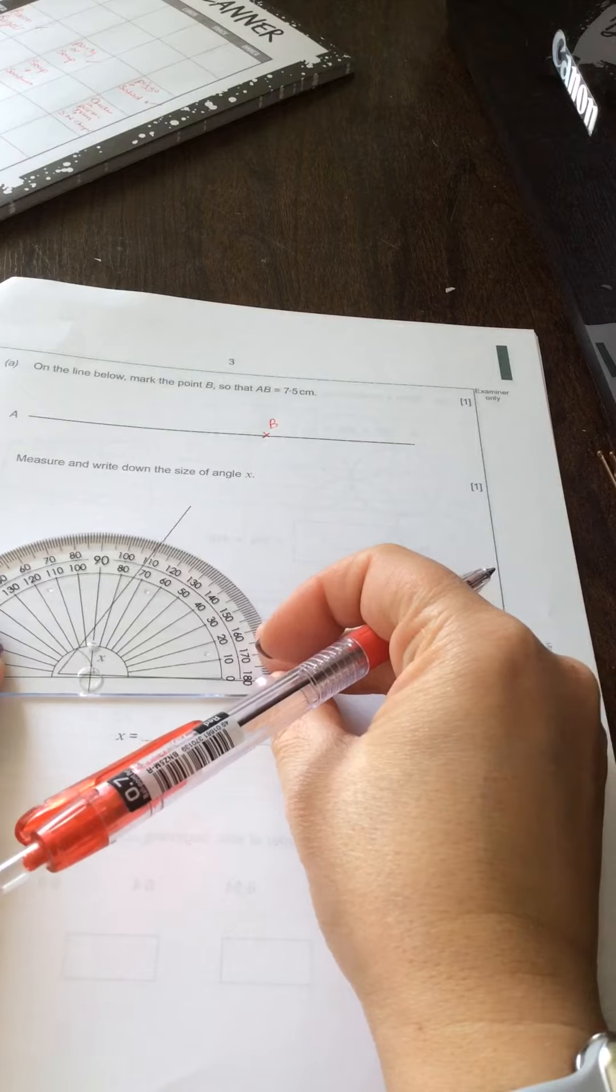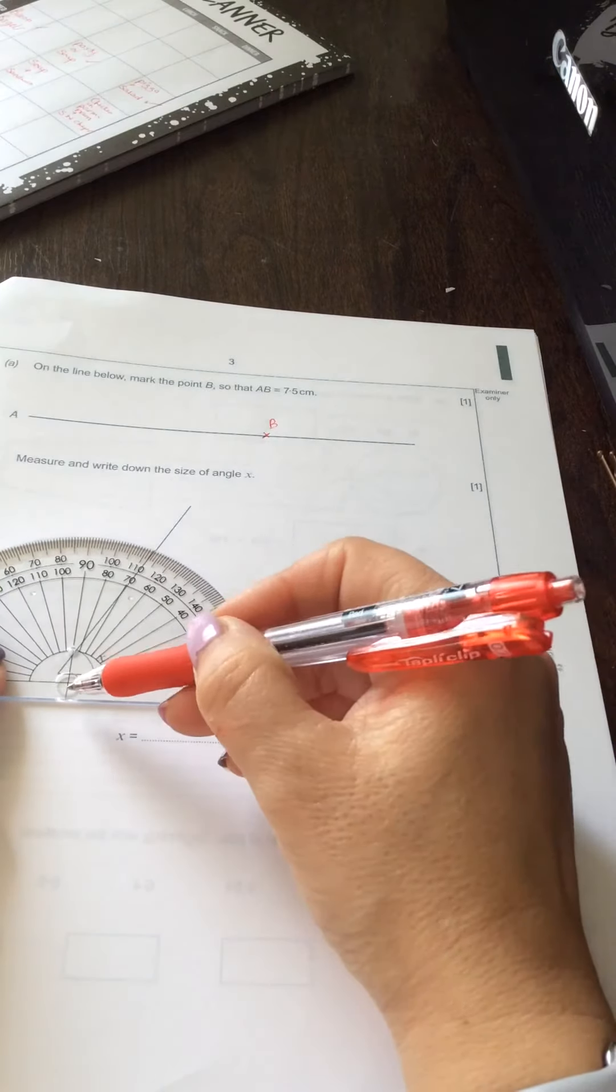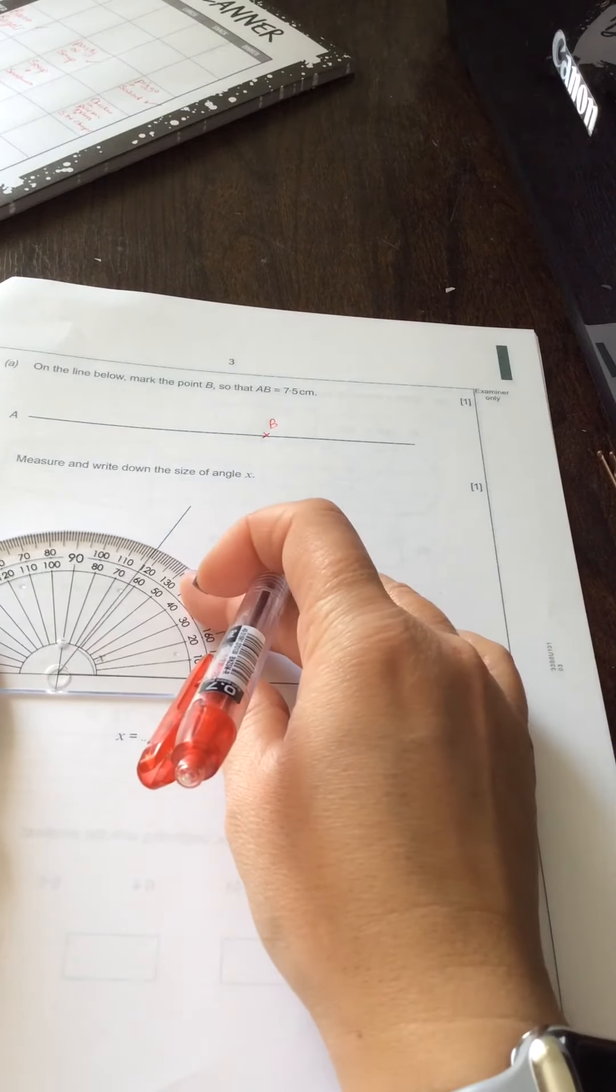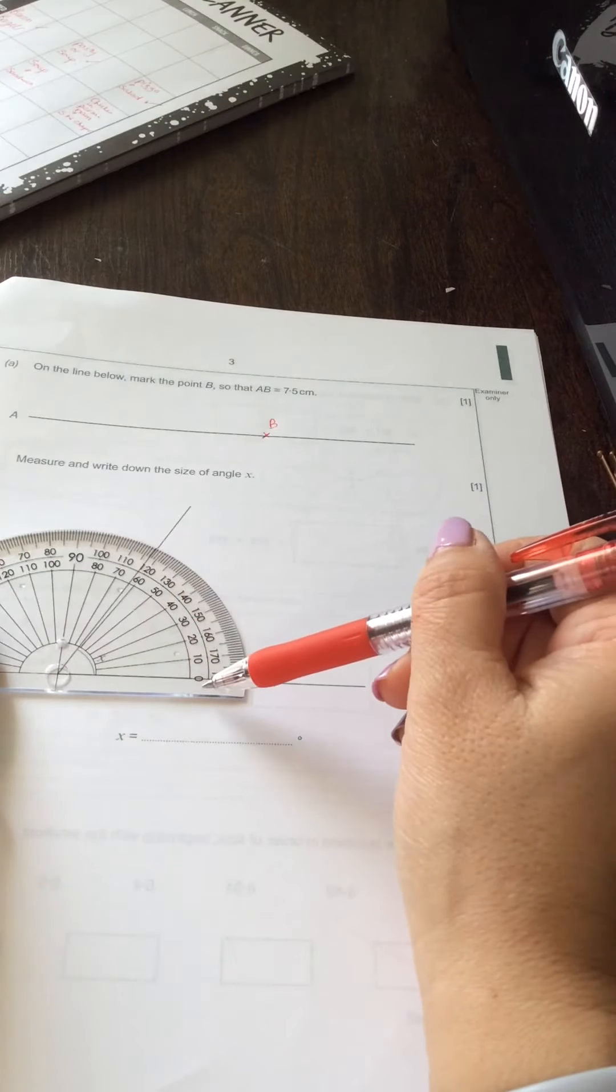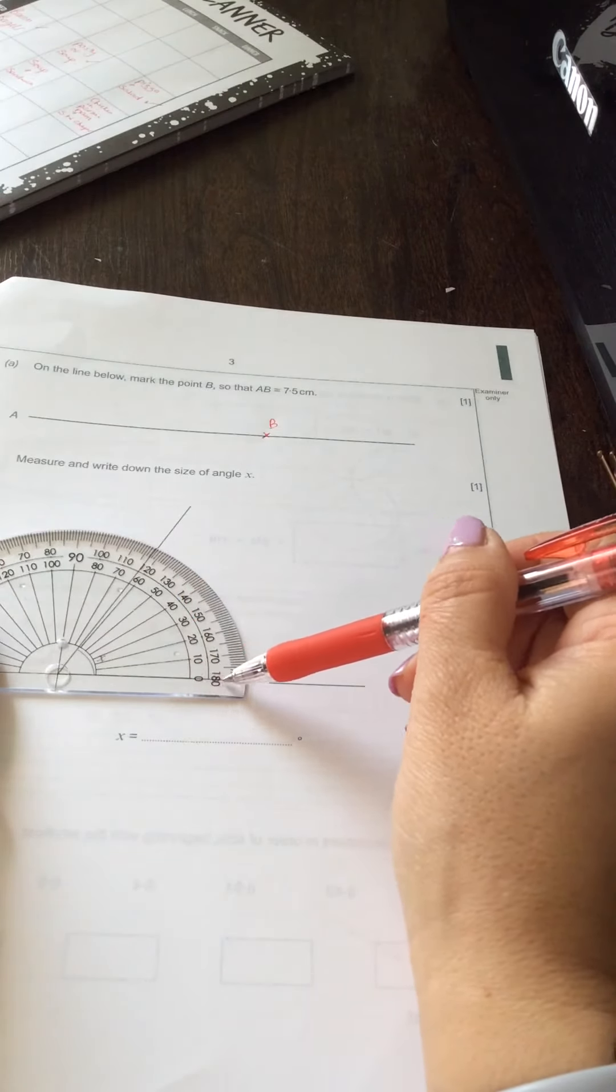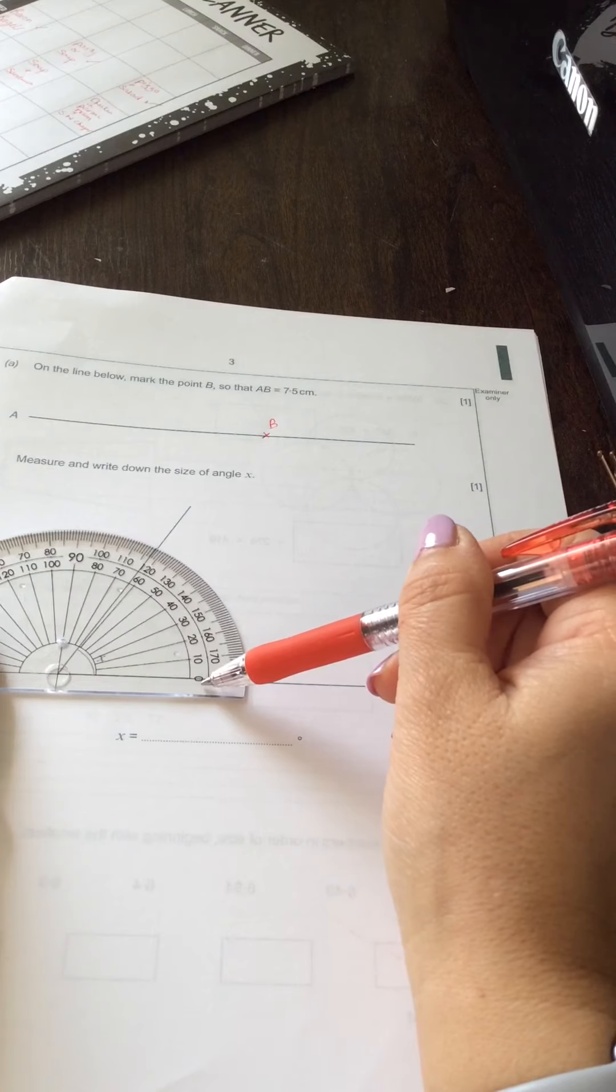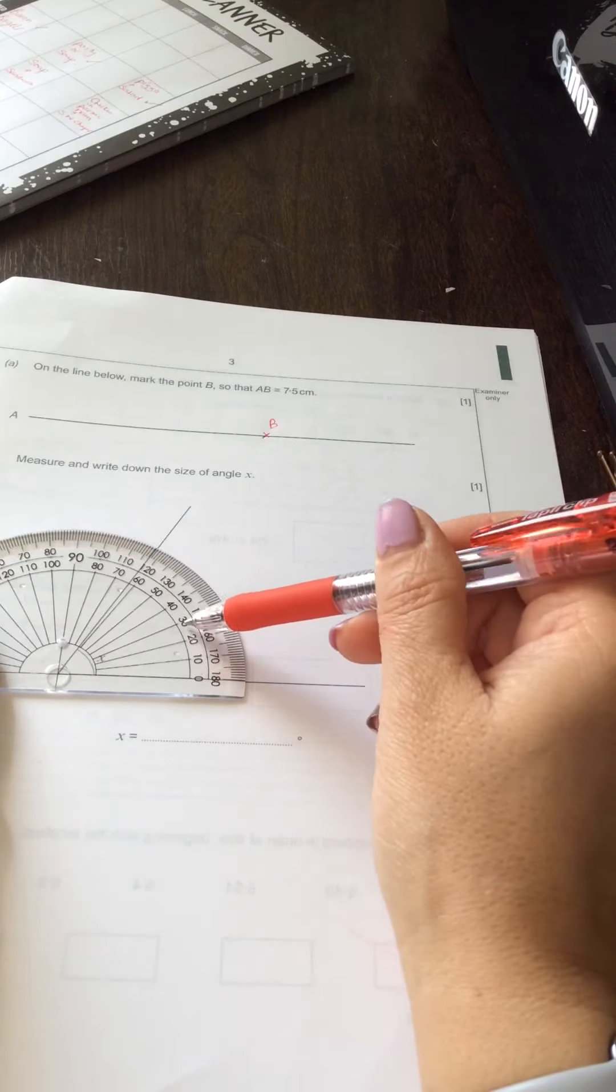You're going to put the cross here on the point of the angle. You can see here that the zero this time, which is on the line, is on the inside, so that's how we're going to measure.